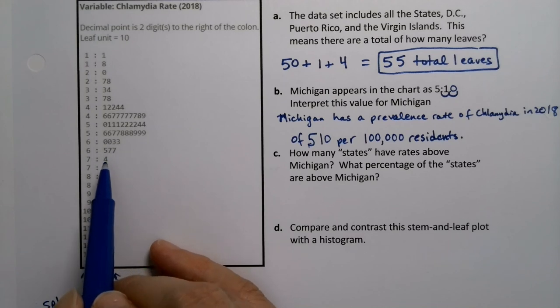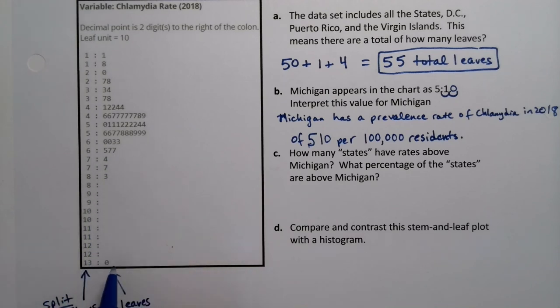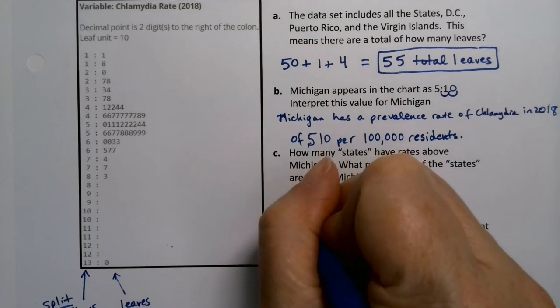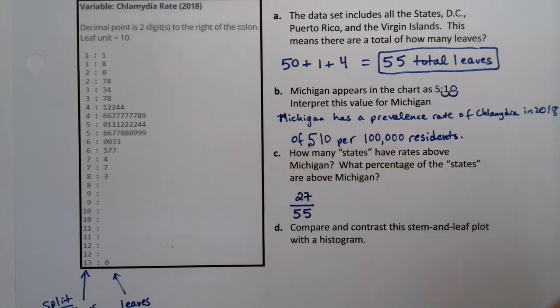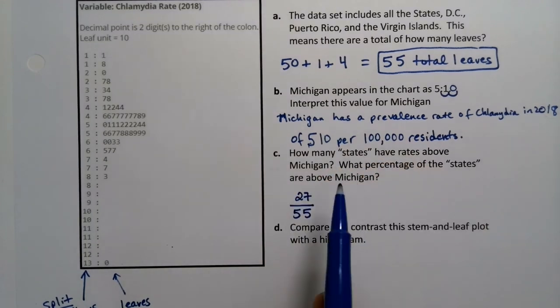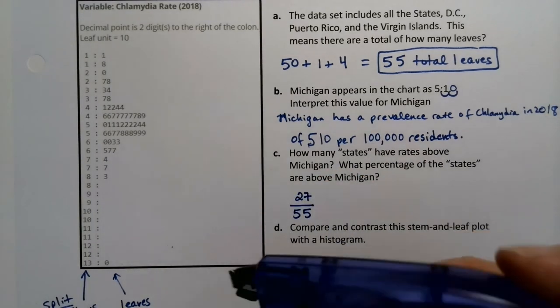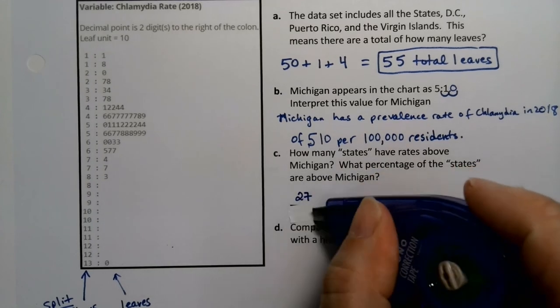21, 22, 23, 24, 25, 26, 27. So there are 27. I put states in quotes because they're not all states, of course. And then it's out of the 55 that there were total. So 27 states.